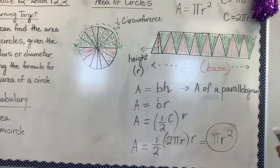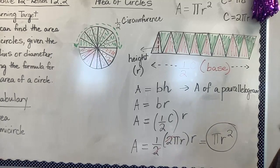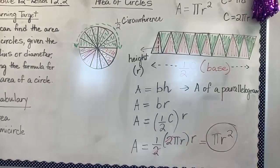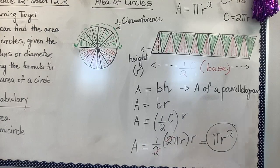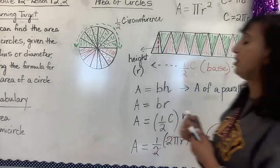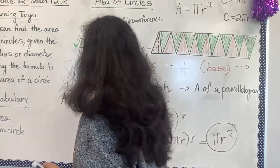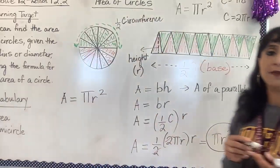That is the correlation showing why we have this area formula, so that you have a better comprehension. We know that the area of a circle — or area — is the measure of the interior surface of a two-dimensional figure. As with the area of polygons, the area of a circle is expressed in square units. The area of a circle is equal to pi r squared.